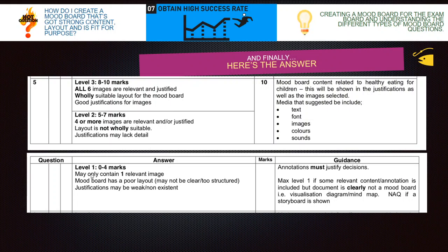Level one may only contain one to three relevant images, the mood board has a poor layout, and justifications may be weak or non-existent. Level two, five to seven marks: four or more of the images are relevant and justified, layout is not wholly suitable, and justifications may lack detail. For the top band, level three, eight to ten marks: all six images are relevant and justified, wholly suitable layout for the mood board, and good justification for images.